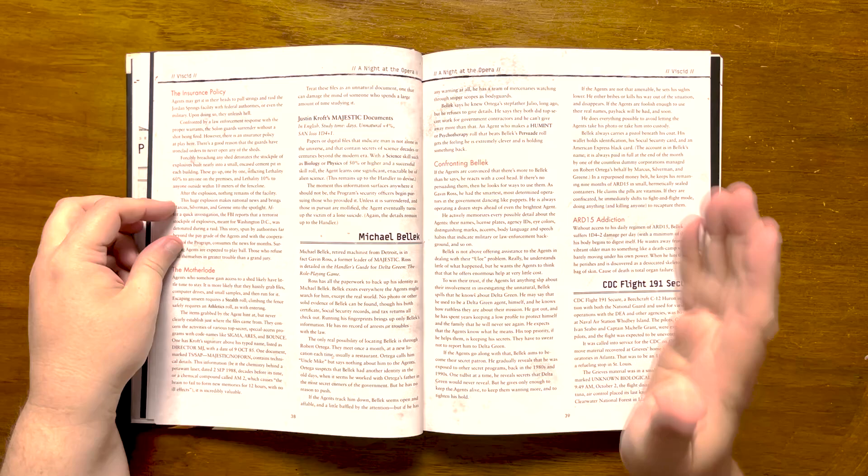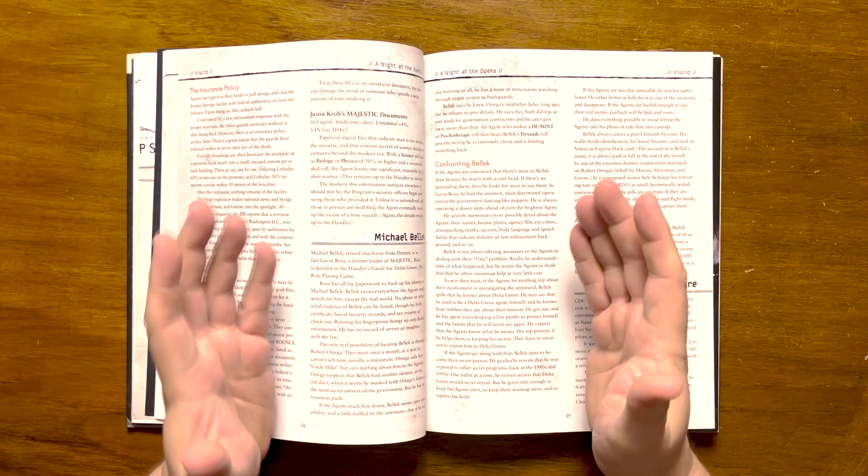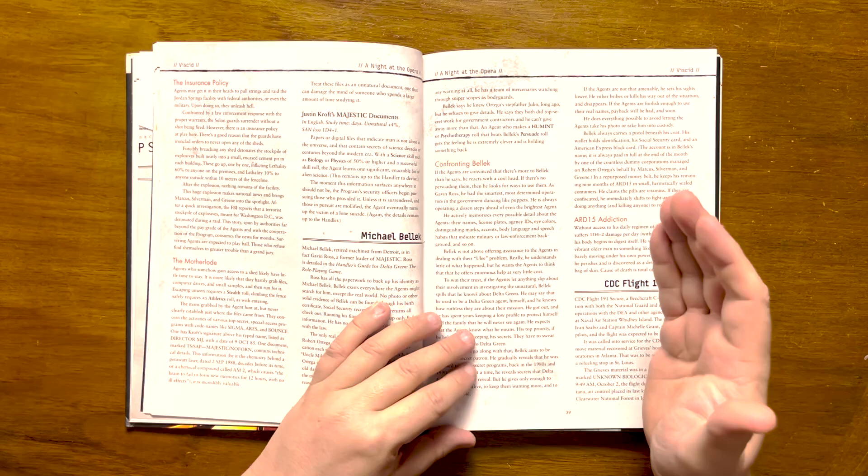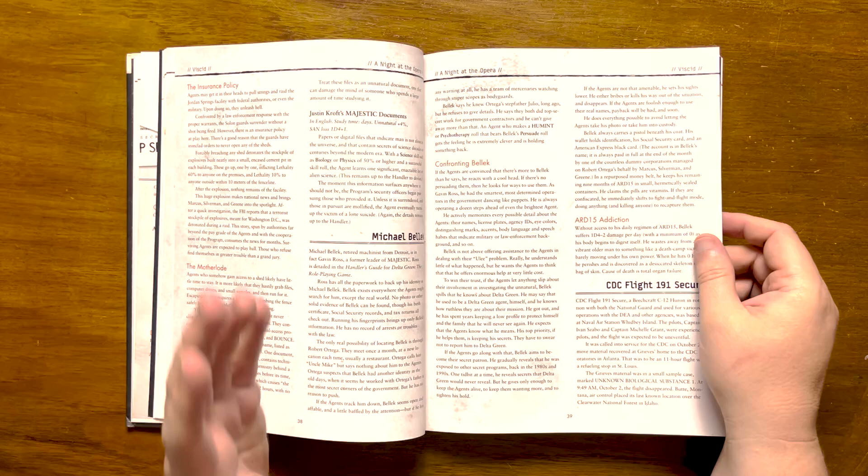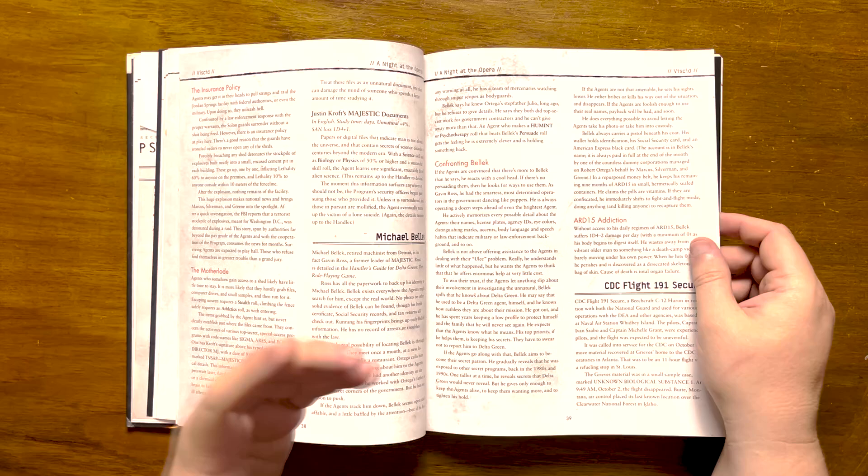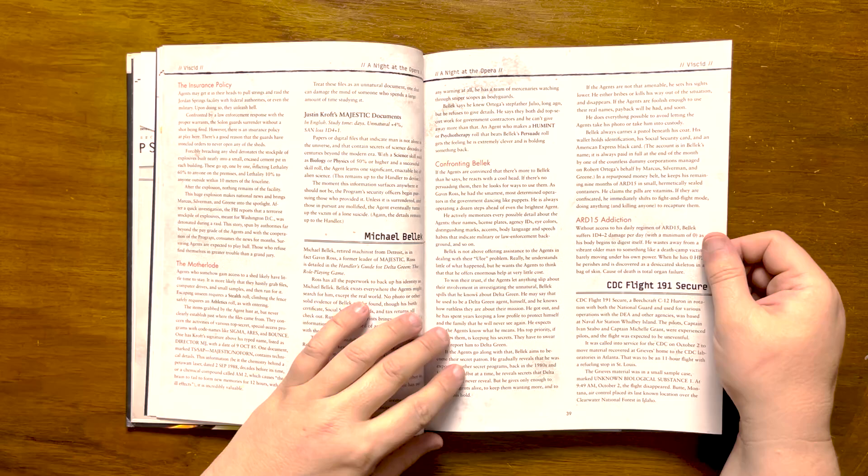Next up it details Michael Bellic, aka Gavin Ross. Formerly a leader of Majestic, he is currently masquerading as Michael Bellic, and pretty much every piece of evidence that agents can find points to this. The only way of locating Bellic is through Robert Justin Ortega, as they meet up once a month, should the agents choose to trail Ortega to find out. The scenario gives possible outcomes for the eventuality of the players confronting him about his past. He is the very model of cool-headed and always operates a dozen steps ahead of the agents. If they reveal their connection to Delta Green, he will let the players know that he knows about Delta Green and can even become their patron, should events push in that particular direction.